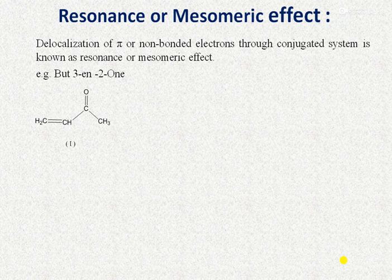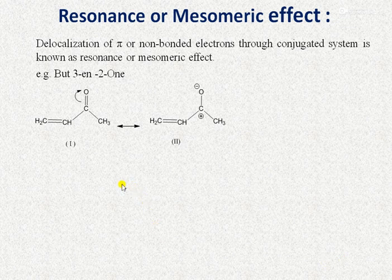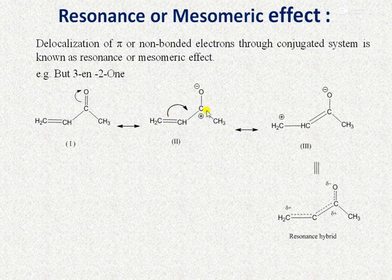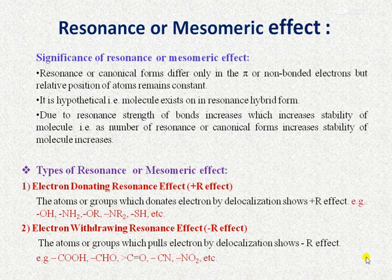Resonance or mesomeric effect is the delocalization of pi or non-bonded electrons through a conjugated system. For example, in but-3-en-2-one, two double bonds separated by one single bond form a conjugated system. The carbon-carbon double bond is in conjugation with the polar carbonyl group, so pi electrons shift onto the oxygen atom, giving carbon a positive charge and oxygen a negative charge. These are canonical forms, and the molecule exists as a resonance hybrid.